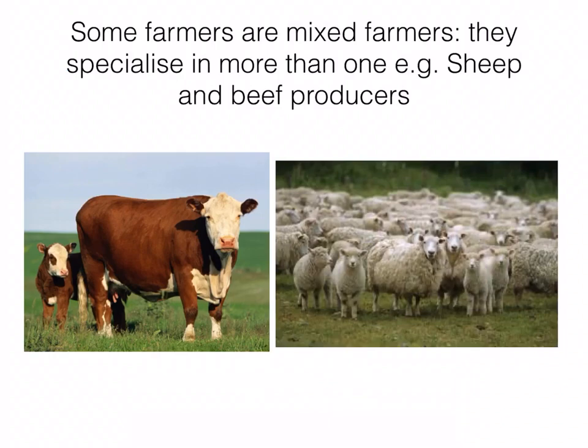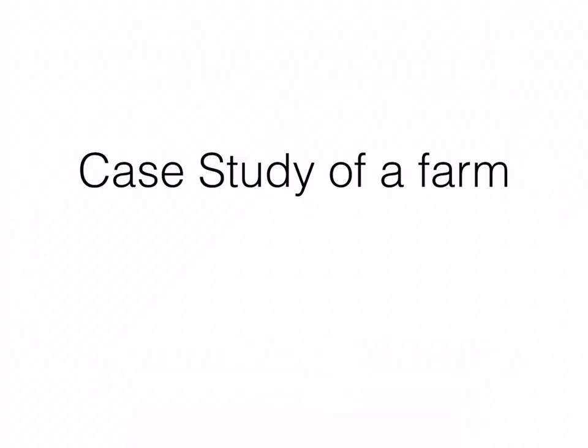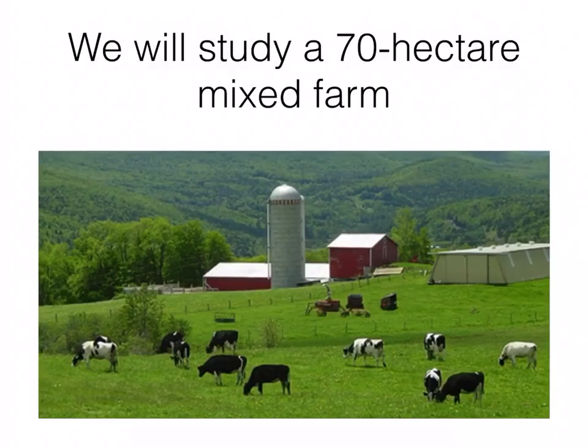Sometimes you have mixed farmers who specialize in more than one type of farming - they might be a beef and sheep farmer. Usually beef brings in the most money and sheep farming supplements their income with an extra bit of cash. We essentially have to study a case study for this section, and once we're done with that, we're finished the chapter.